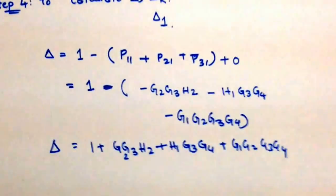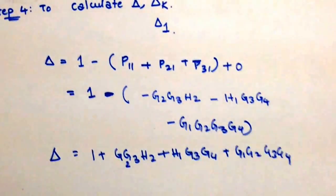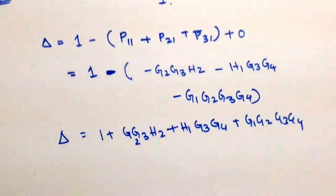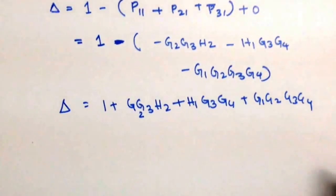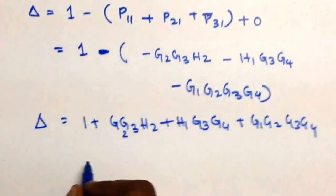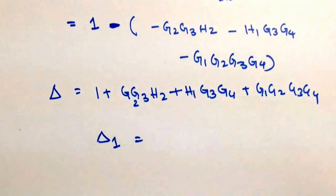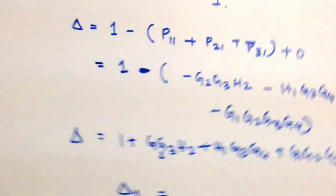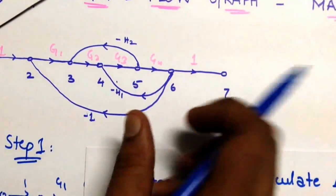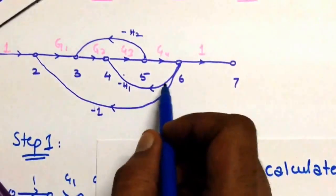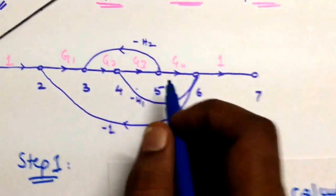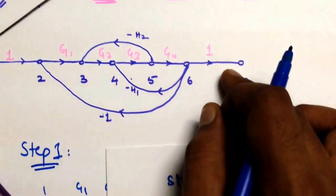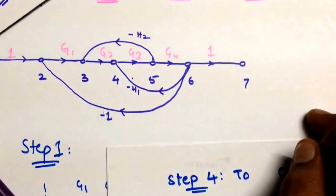Delta in any problem equals one minus the sum of individual loop gains plus the sum of products of non-touching loop pair gains. Since we have no non-touching loops here, we don't need to worry about it. Similarly, delta_1 equals one because no loop is non-touching with the forward path — meaning no loop avoids overlapping with the forward path from node 1 to node 7.